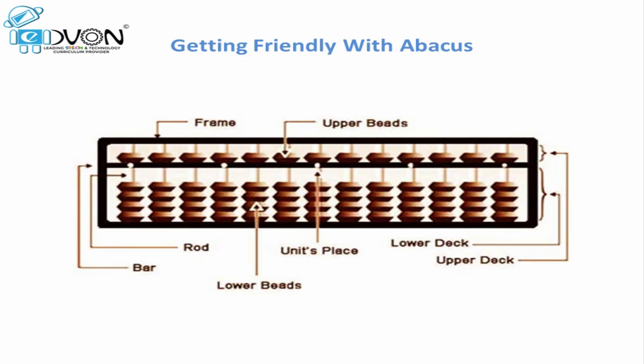Abacus is the oldest device to perform arithmetic operations. On abacus we cannot only add or subtract, but we can also multiply, divide, and perform complex arithmetic operations. Let's study its components. As you can see a picture of Japanese abacus on your screen, the outer black part is called the frame of abacus.